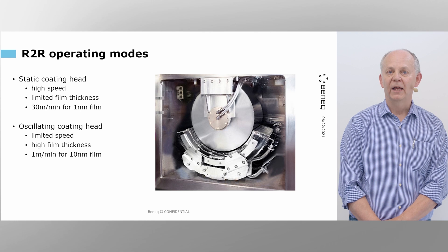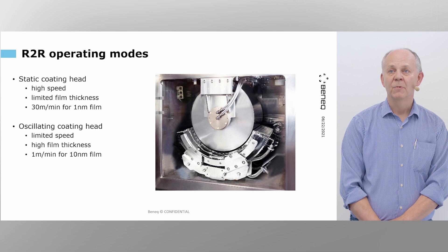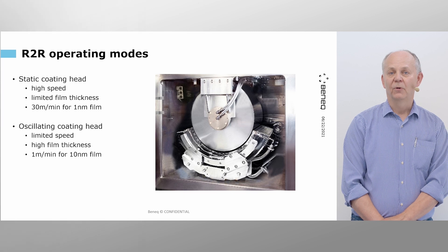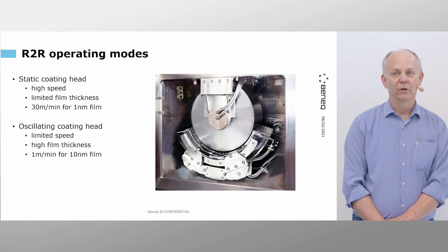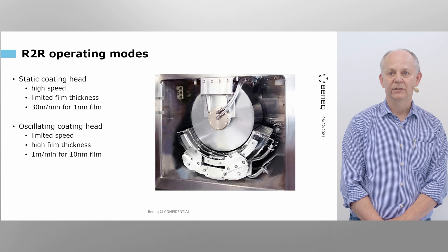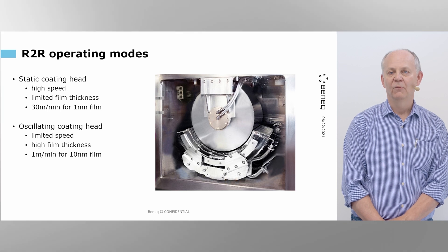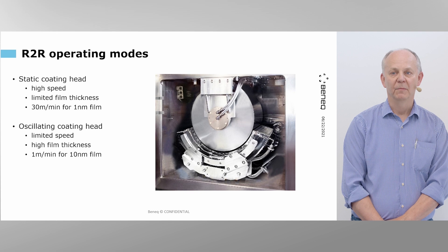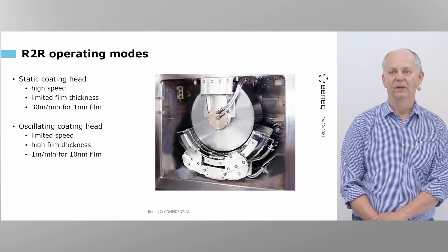Genesis ALD roll-to-roll has two operating modes. The static coating head mode is for thin films like a one nanometer film, and the process speed is up to 30 meters per minute. For thicker films, the coating head can be oscillating, and then the line speed is one meter per minute for a 10 nanometer film.